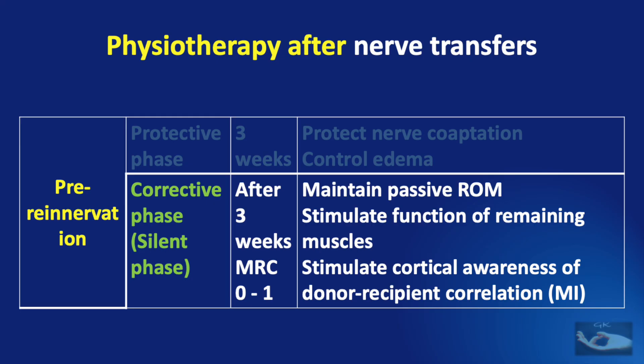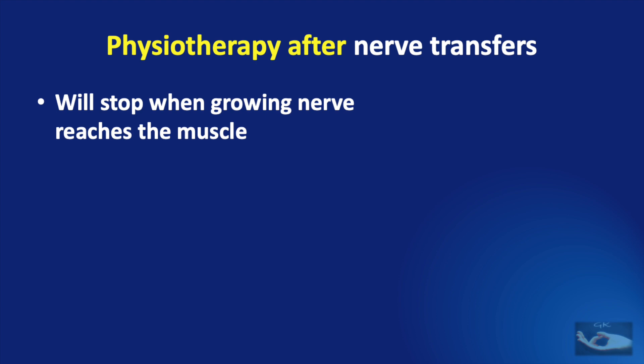The second phase is the corrective phase, sometimes known as the silent phase. This is done after three weeks, that is after removal of the POP, and it stops when the MRC grading reaches 1. The mainstay of management in this phase is to maintain passive range of movement, to stimulate function of the remaining muscles, and to stimulate cortical awareness of donor-recipient correlation — that is MI, or motor imagery. The patient imagines the movement occurring in the muscle that is not yet innervated.